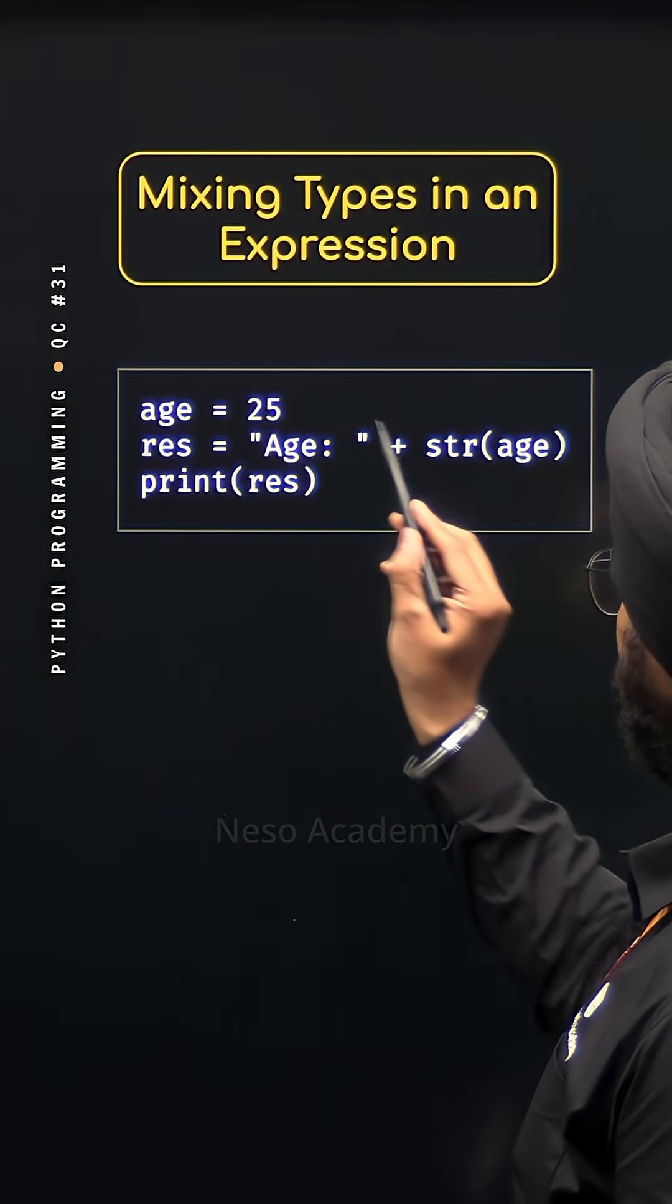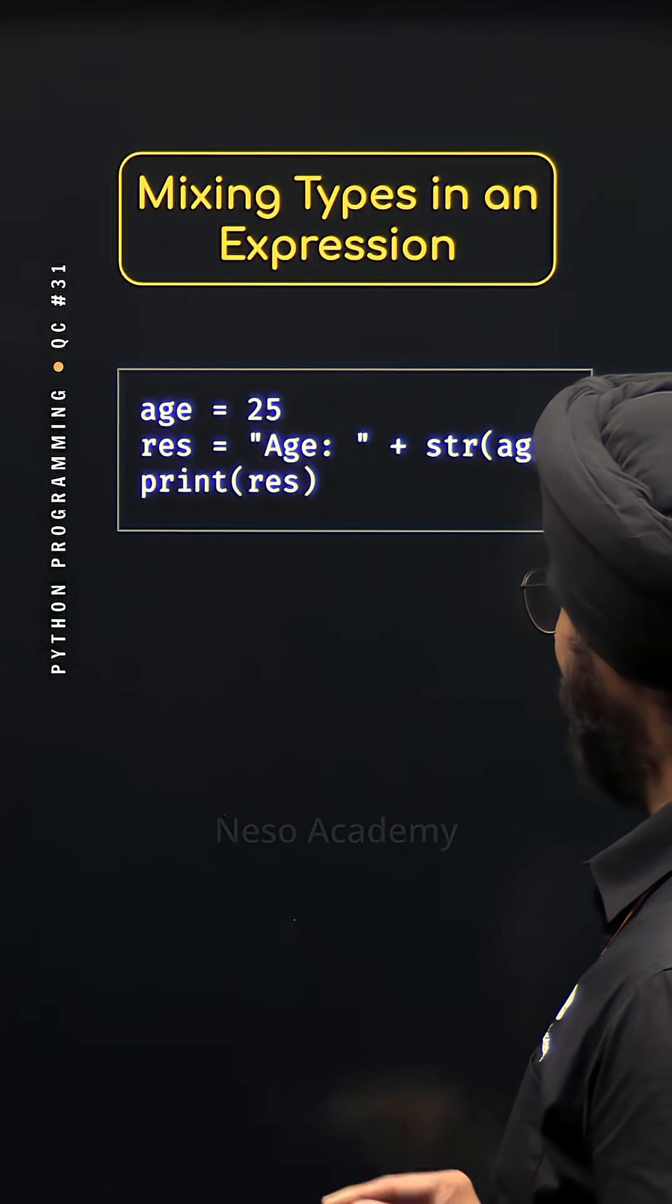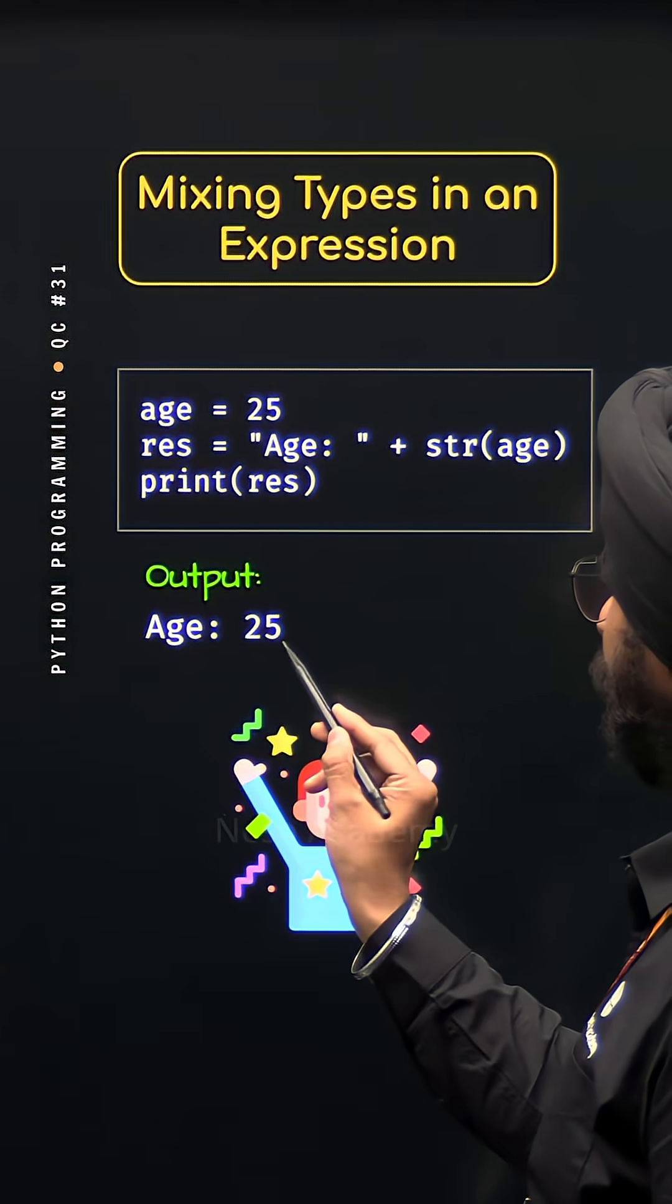Here we will get the string 25. Now we can add these two strings and we will get the result age colon 25.